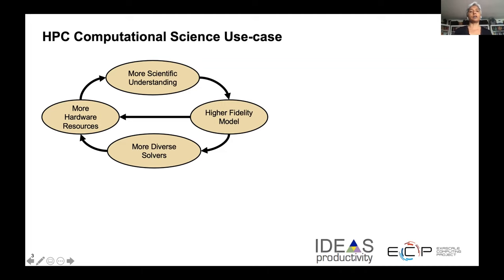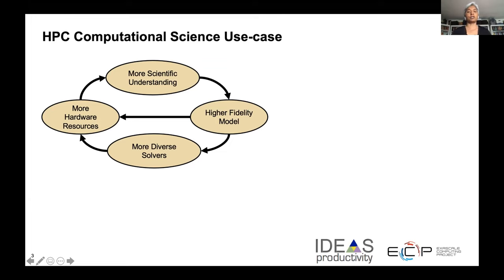What I'm going to be talking about is the important considerations for designing scientific software. You've seen this particular figure earlier in David's introduction — this is a typical computational science use case, where there is a positive feedback loop cycle. When you understand your science better, you want higher fidelity models, which typically means fewer approximated terms in your equations, and more diverse solvers.